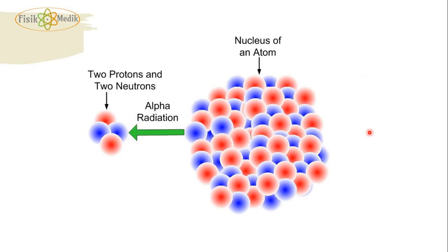The nucleus can be a source of radiation. Alpha radiation occurs when the nucleus is very massive — the excess mass is released as a particle containing two protons and two neutrons. This particle is called alpha radiation, and it is a way to stabilize the nucleus.